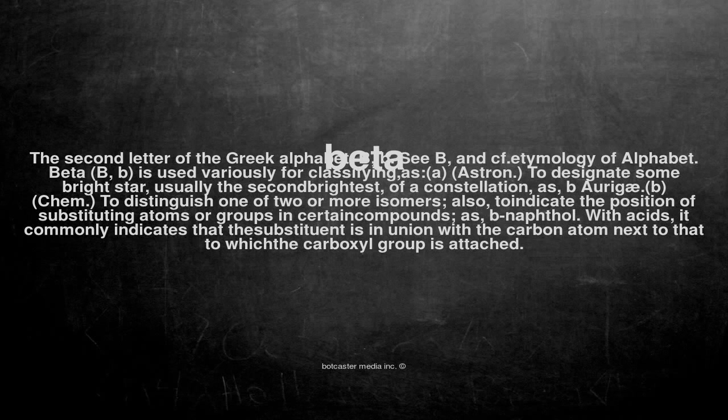Beta is used variously for classifying, as in astronomy, to designate some bright star — usually the second brightest of a constellation — as in Beta Aurigae.